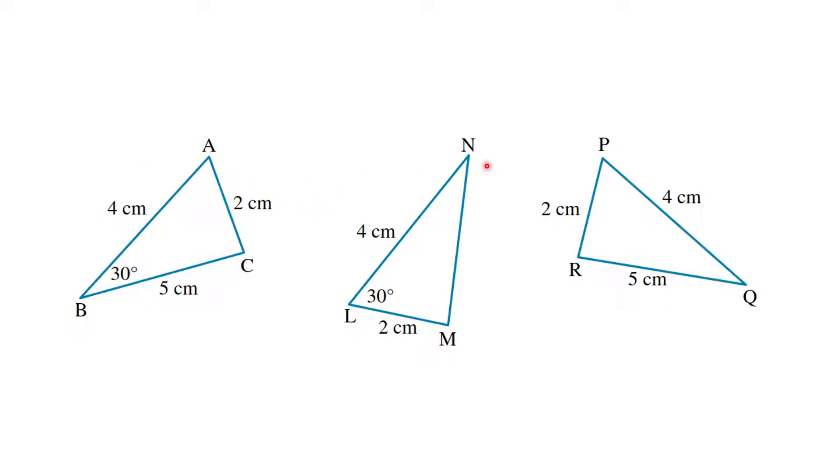This one would be the first and the third one, because of SSS, you see there's matching twos, matching fours, matching fives. Why these two don't count is because the 30-degree angle is in the wrong place. In the first one, it's between the four and the five. In the second one, it's between the four and the two, and so that's why these two are not matching. So it's the first one and the third one because of SSS.